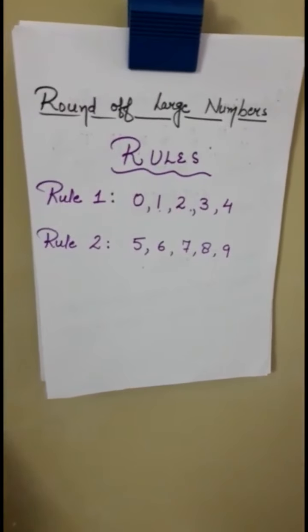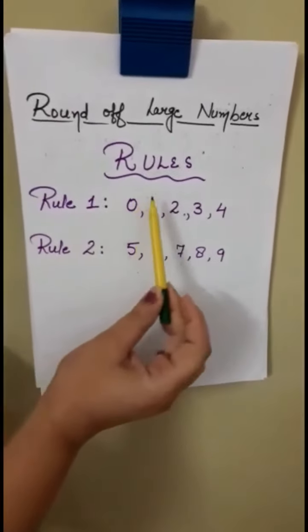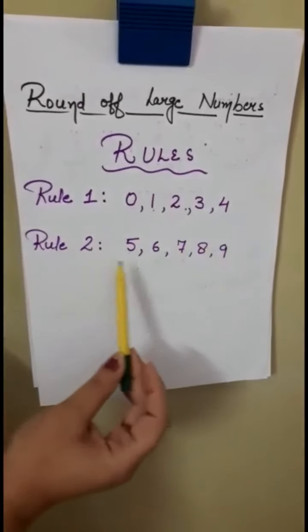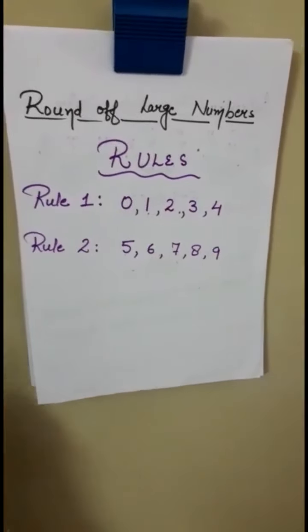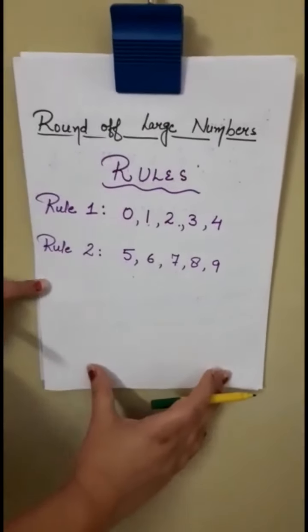Isme aapne karna hai only and only you have to remember 2 rules. Rule 1 just keep it in mind: 0, 1, 2, 3, 4. Rule 2: 5, 6, 7, 8, 9. Now what you have to do with these numbers is like rule 1 mein we have 0, 1, 2, 3, 4.